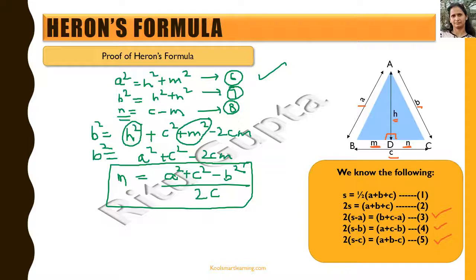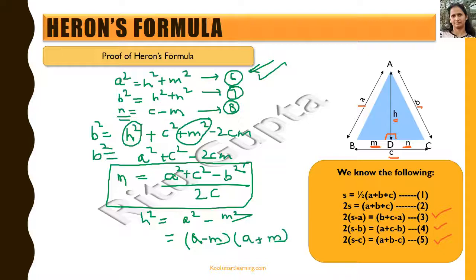From equation 6, A² = H² + M², so H² = A² - M², which factors as (A - M)(A + M). Now we replace the value of M into this equation to see what it comes out to be.